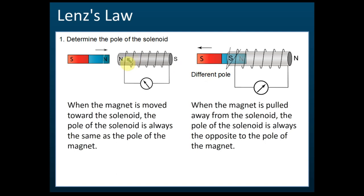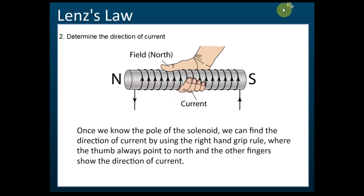Now after you know the north and south pole — whether this one is north pole, south pole, or this one is south pole, north pole — then you can determine the directions of the current. We can use the right-hand grip rule to determine the directions of the current.